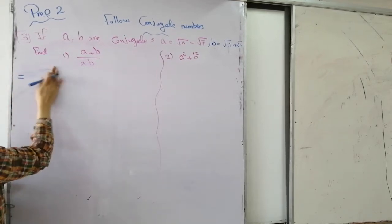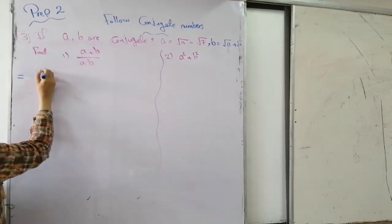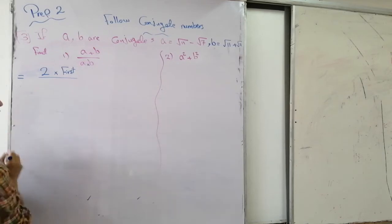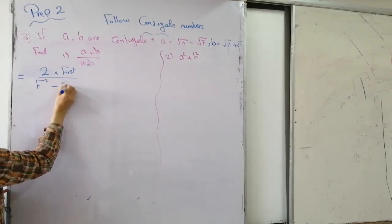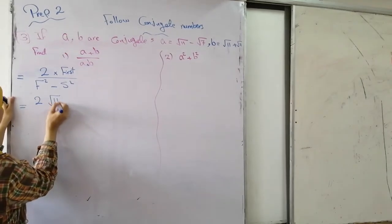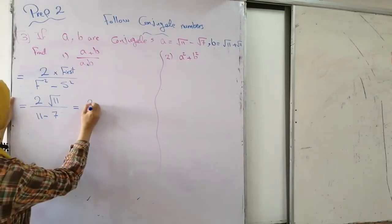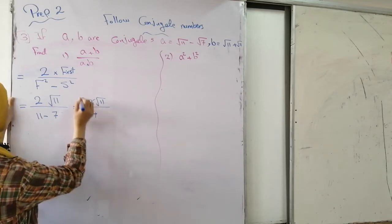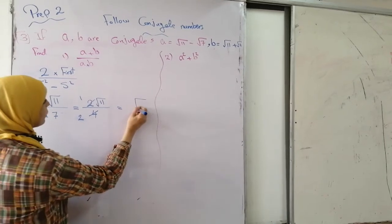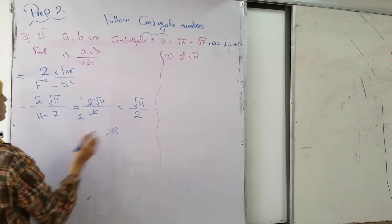For (a plus b) over (ab): the sum of conjugates equals 2 times the first term, and the product equals first squared minus second squared. So we get 2 root 11 over (11 minus 7), which equals 2 root 11 over 4. Simplifying by dividing by 2, the final answer is root 11 over 2.